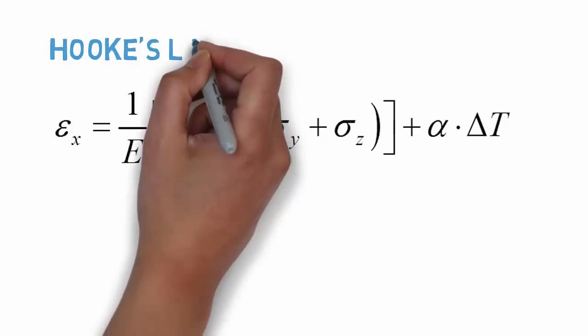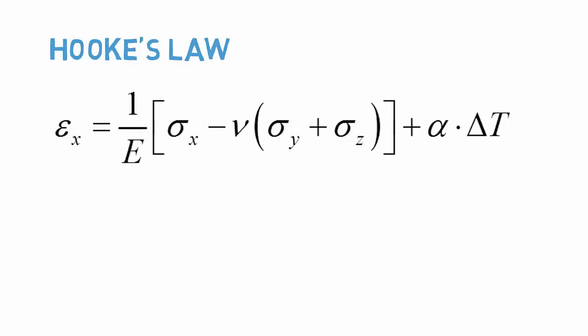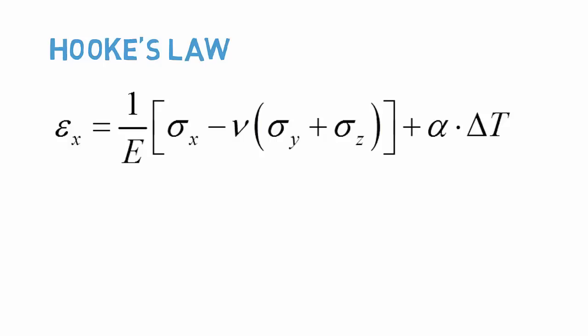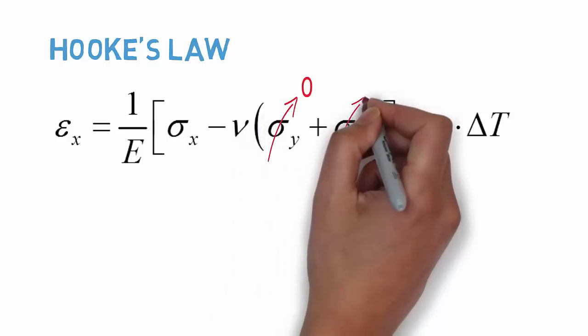We can now look at Hooke's Law in relation to our problem. All loading in our problem is along the axis of the rod, and there are no constraints on deformation due to the Poisson effect. As a result, there will be no stresses in either the y- or the z-directions.